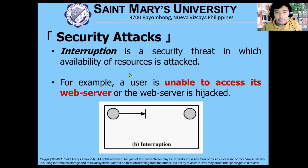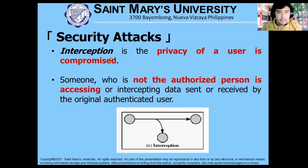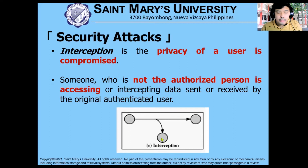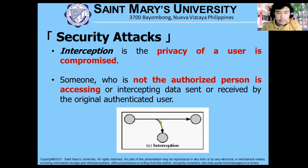Interception means the privacy of a user is compromised — an unauthorized person is accessing or intercepting data sent or received by the original authenticated user. For example, you are communicating with a bank, and a third-party person is intercepting your data. This attacker can gather your personal information, including your bank account details, and later use that information to access your bank account and withdraw money. So the unauthorized person now has access to your privacy.